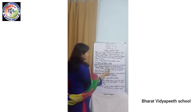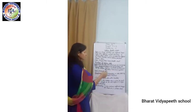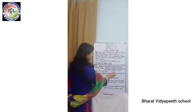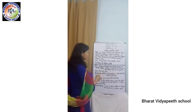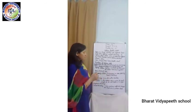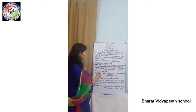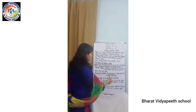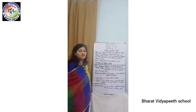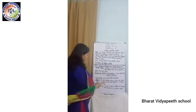Dyeing is the process of coloring the clothes. It can be done using chemical dye. It is done both by hand and by machine.